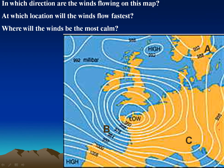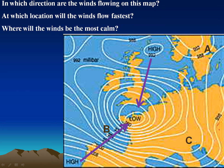Let's look at this map. We've got our isobar lines. Which direction do winds flow? They blow from high to low, so the air is being drawn towards this low pressure. The winds flow fastest when there's a steeper slope — when lines are closer together, that indicates a steeper slope. So at location B, we'd have faster winds than at A or C. At C, the lines are so far apart that there's so much less pressure difference between them, so there won't be much wind at all there.